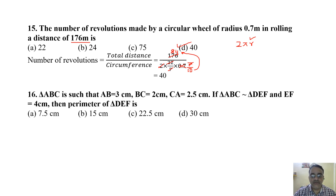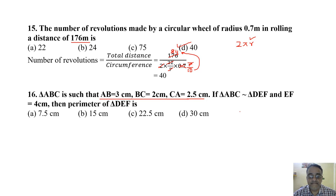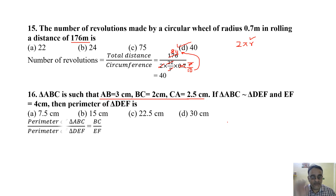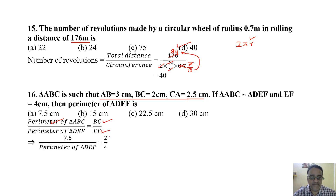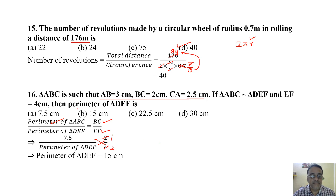Question 16: Triangle ABC with AB=3 cm, BC=2 cm, CA=2.5 cm is similar to triangle DEF, and EF=4 cm. Find the perimeter of triangle DEF. Perimeter of ABC = 3 + 2 + 2.5 = 7.5 cm. For similar triangles, ratio of perimeters equals ratio of corresponding sides. 7.5/perimeter(DEF) = BC/EF = 2/4 = 1/2. So perimeter of DEF = 15 cm. The correct answer is option B.